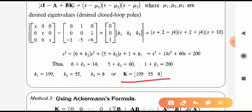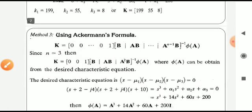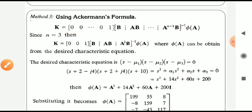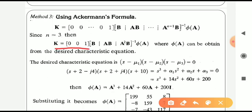For Method 3, Ackermann's formula: for an nth-order system, K equals [0, 0, ..., 1] times the inverse of the controllability matrix times phi of A. For this problem with n equal to 3, K equals [0, 0, 1] times inverse of [B, AB, A²B] times phi of A. Phi of A can be obtained from the desired characteristic equation: (s minus mu-1)(s minus mu-2)(s minus mu-3) equal to zero.